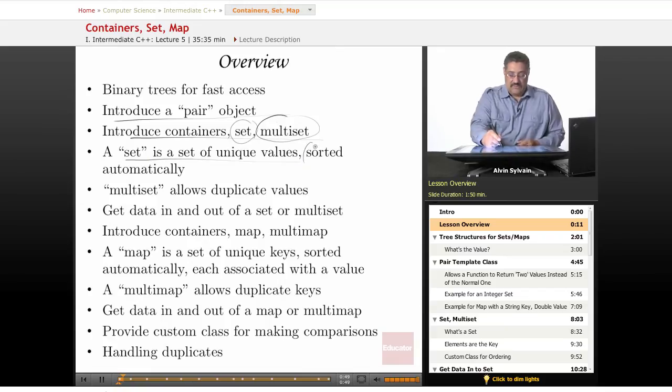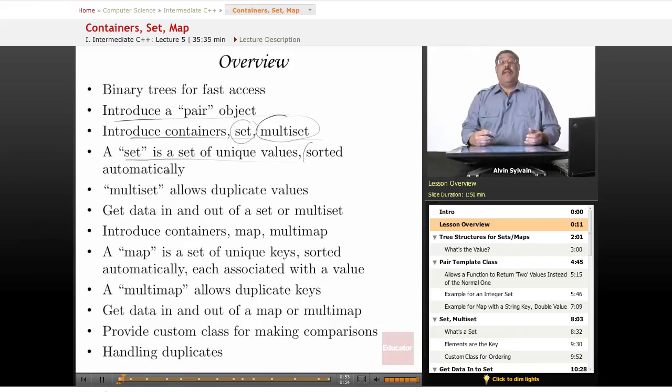They're sorted automatically, kept in a binary tree in order. As soon as you add a new node it will look where it's going and put it in order. Multiset allows duplicate values.